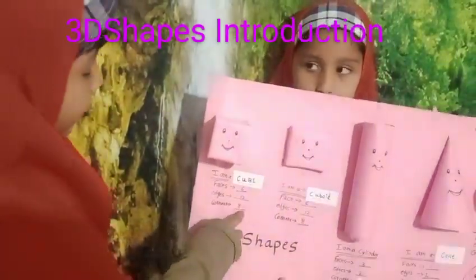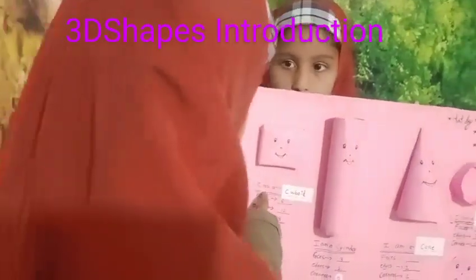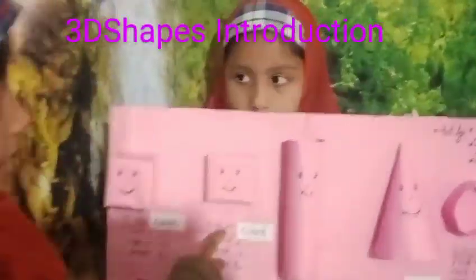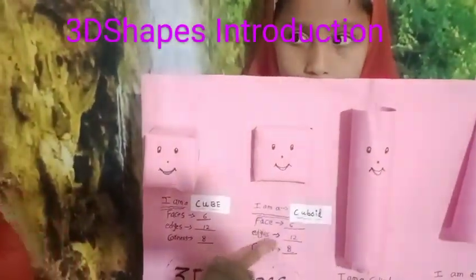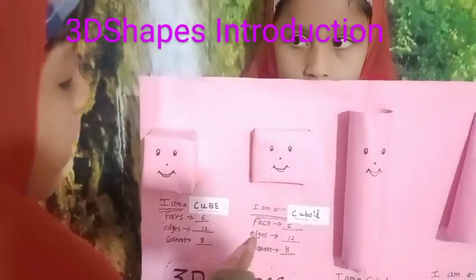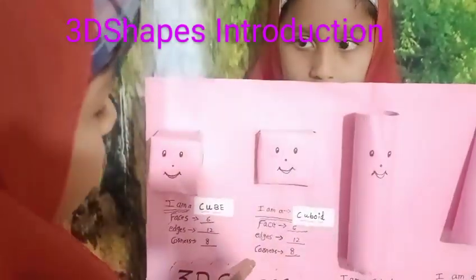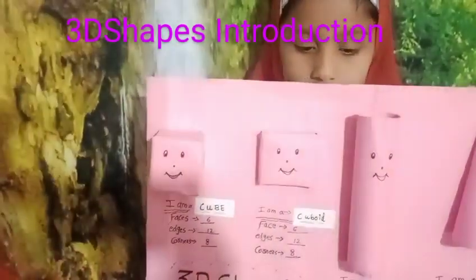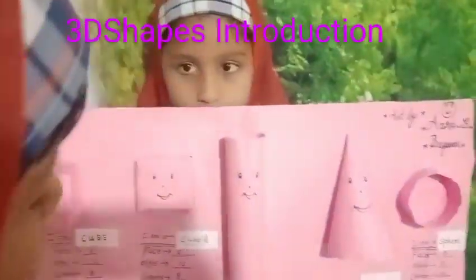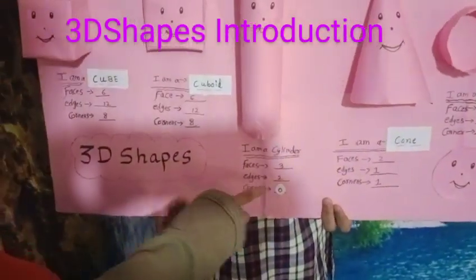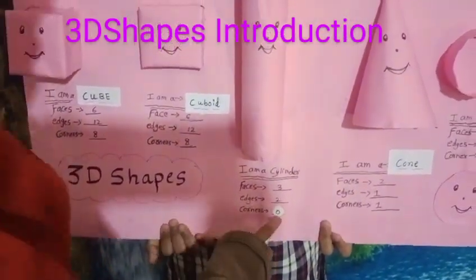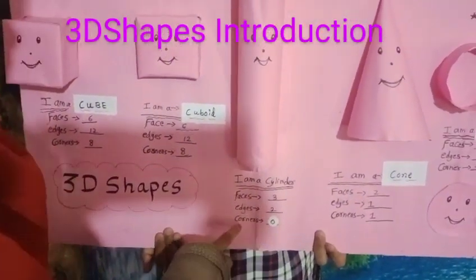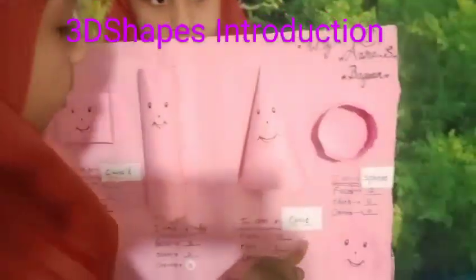I have 8 corners. I am a cylinder. I have 3 faces. I have 2 edges. I have 0 corners.